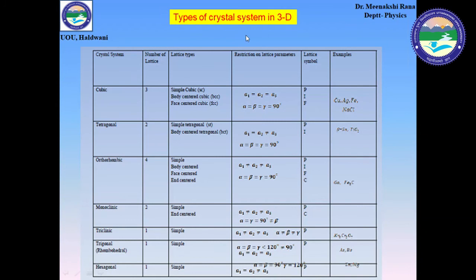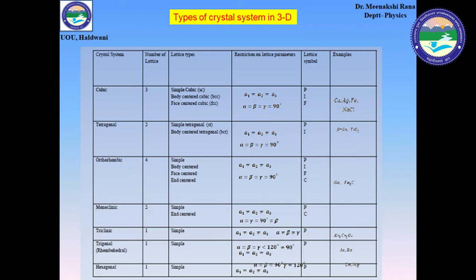In three dimensions, we have several crystal systems corresponding to 14 types of Bravais lattices. For the cubic type, we have three Bravais lattices: simple cubic, body-centered, and face-centered. The condition is a1 = a2 = a3 and α = β = γ = 90°, where α is the angle between a1 and a2, β between a2 and a3, and γ between a3 and a1.